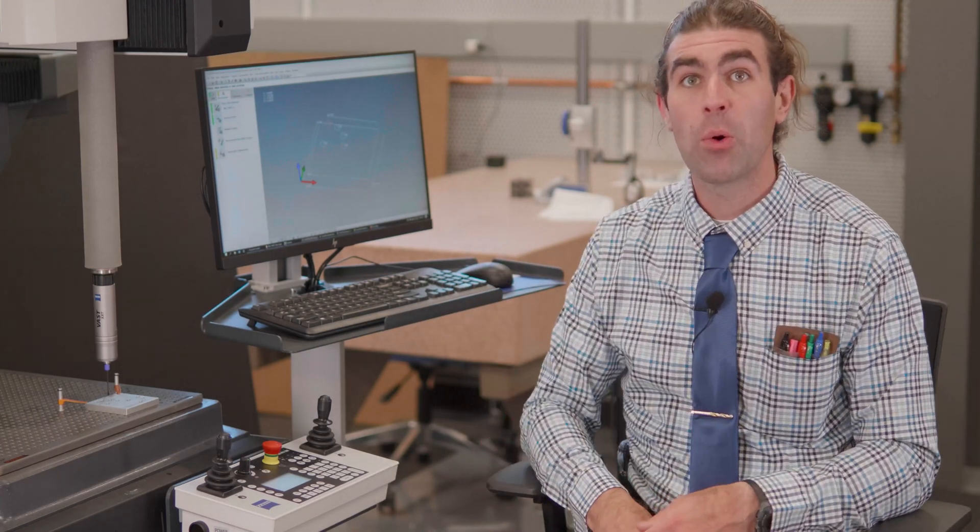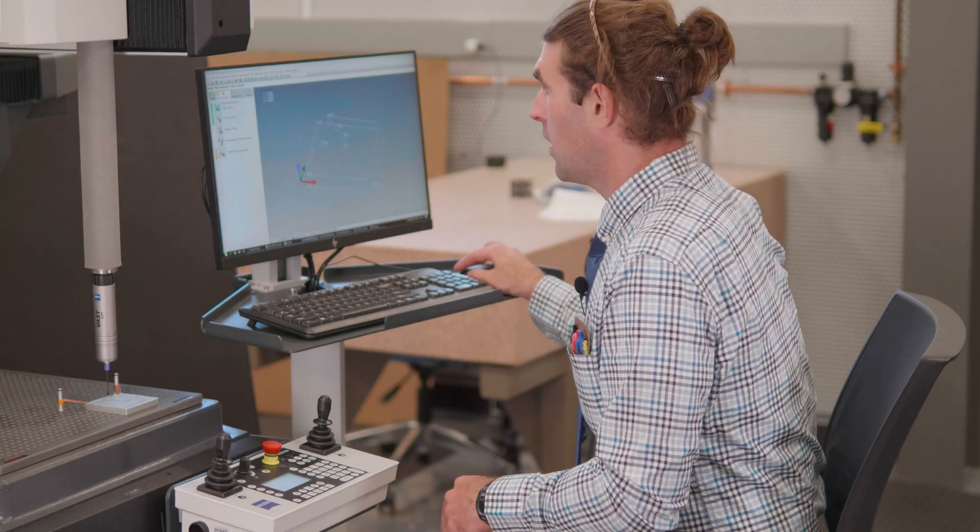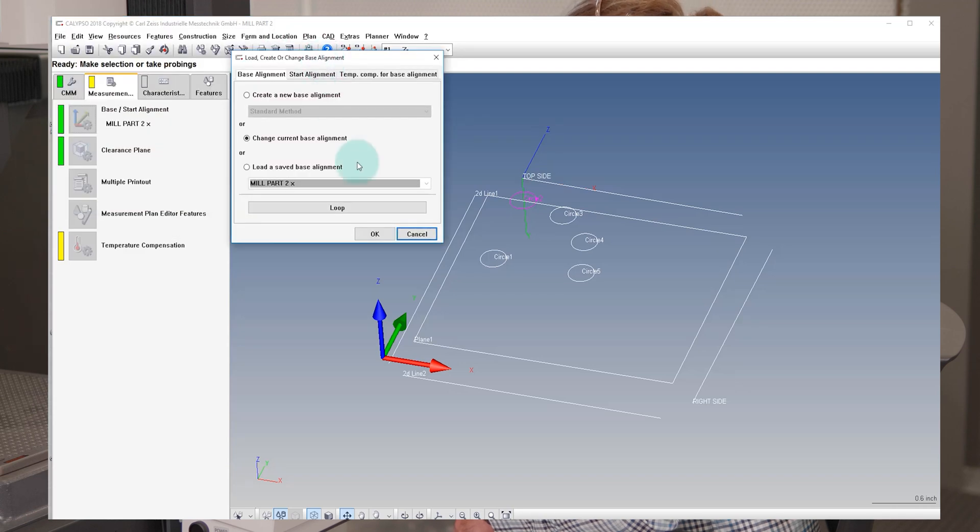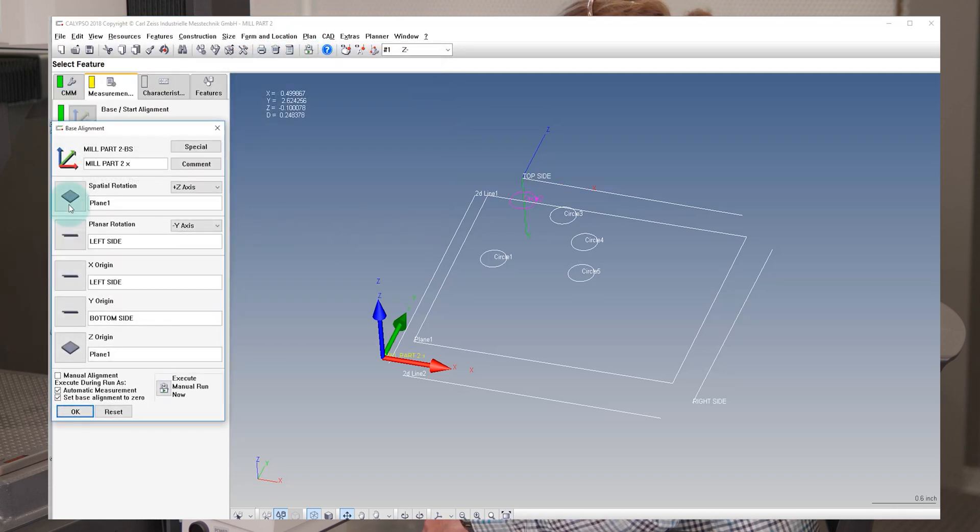So now we can go to the measurements tab and we're going to move that alignment. So click on base start alignment, hit OK. Spatial rotation is OK. Planar rotation can stay the same.